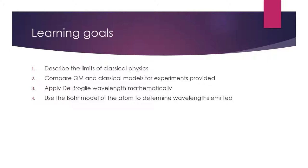Last time we looked at black body radiation and the photoelectric effect — these experiments defied classical mechanics and required new quantum mechanical ideas to explain them. Today we'll continue with two more. The first one we'll discuss is the infamous double slit diffraction experiment. You probably all remember this from gen chem and high school. What we want to do is start by considering what is actually going on here and why it's such a strange experiment, beginning by looking at diffraction.